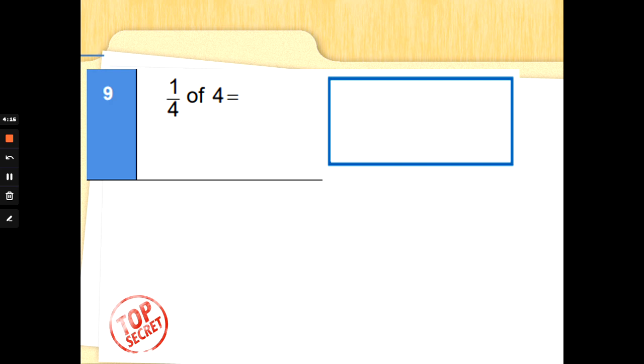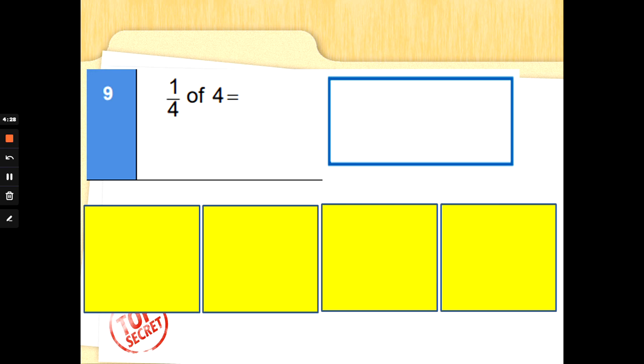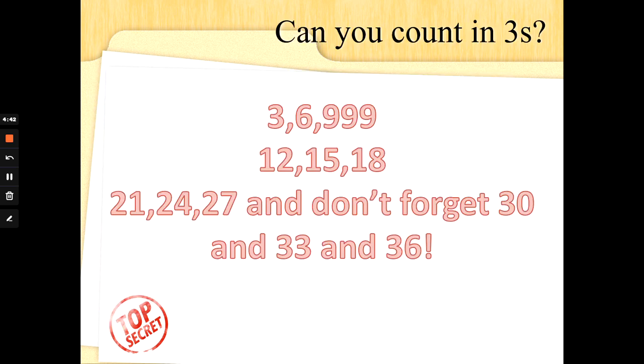1/4 of 4. The bottom number wants us to draw 4 boxes. We're finding quarters. Splitting into 4 or sharing into 4 equal groups. Draw your boxes first. And let's get sharing these 4 dots out. Off we go: 1, 2, 3, 4. Well done. What's 1/4 of 4? How many dots in 1 box? That's right. 1/4 of 4 is 1. Well done.